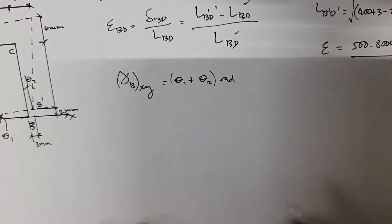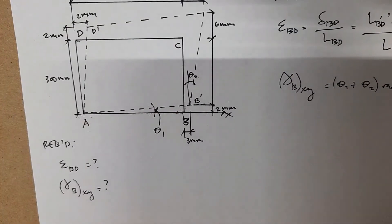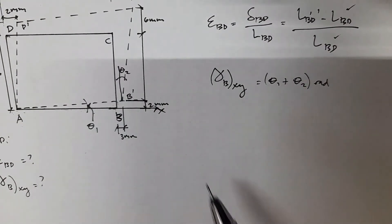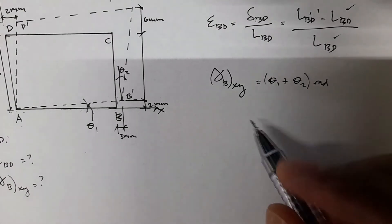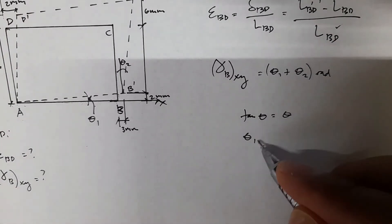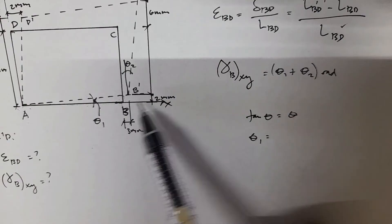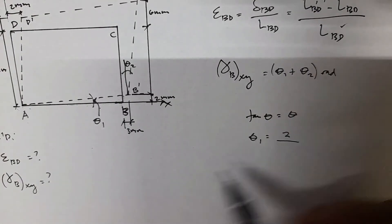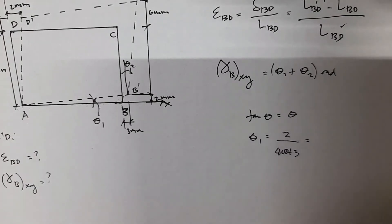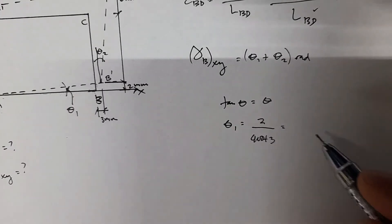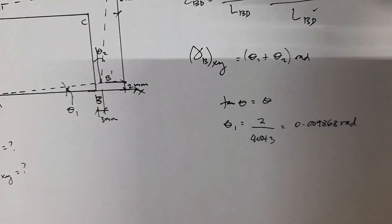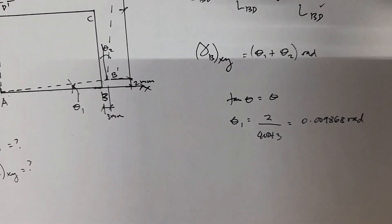Shear strain requires solving theta 1 and theta 2. Since we are dealing with very small angles, we can use the small angle approximation: tangent of theta equals theta. So theta 1 equals 2 divided by 400 plus 3, which gives approximately 0.004963 radians.